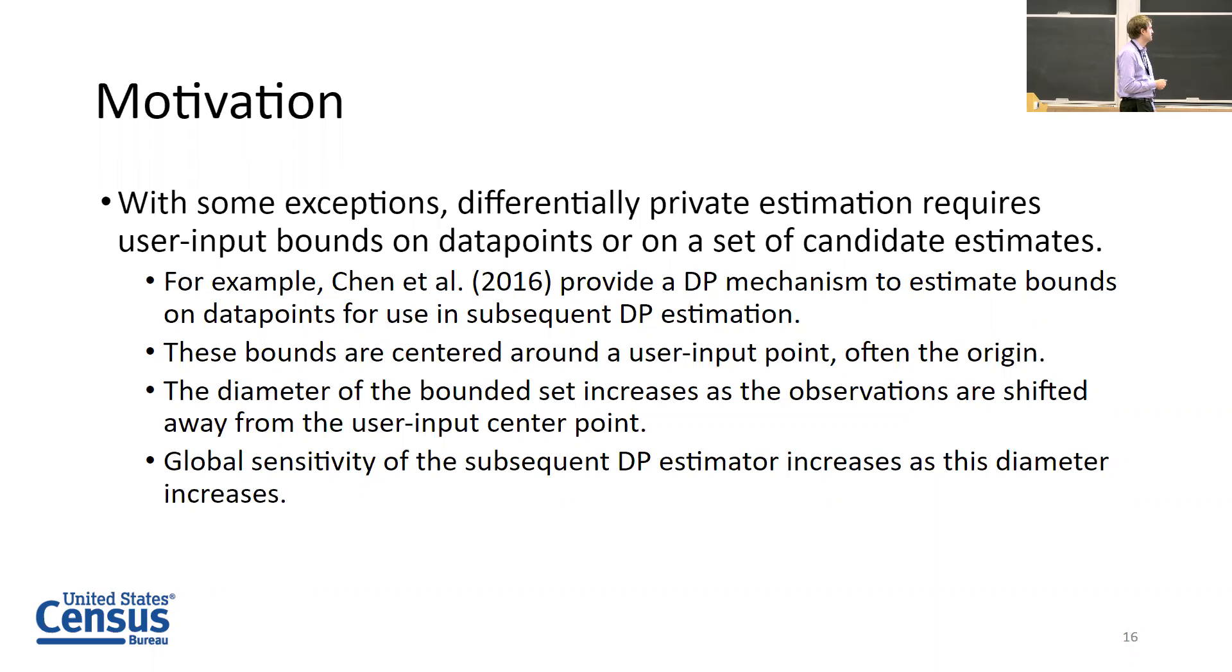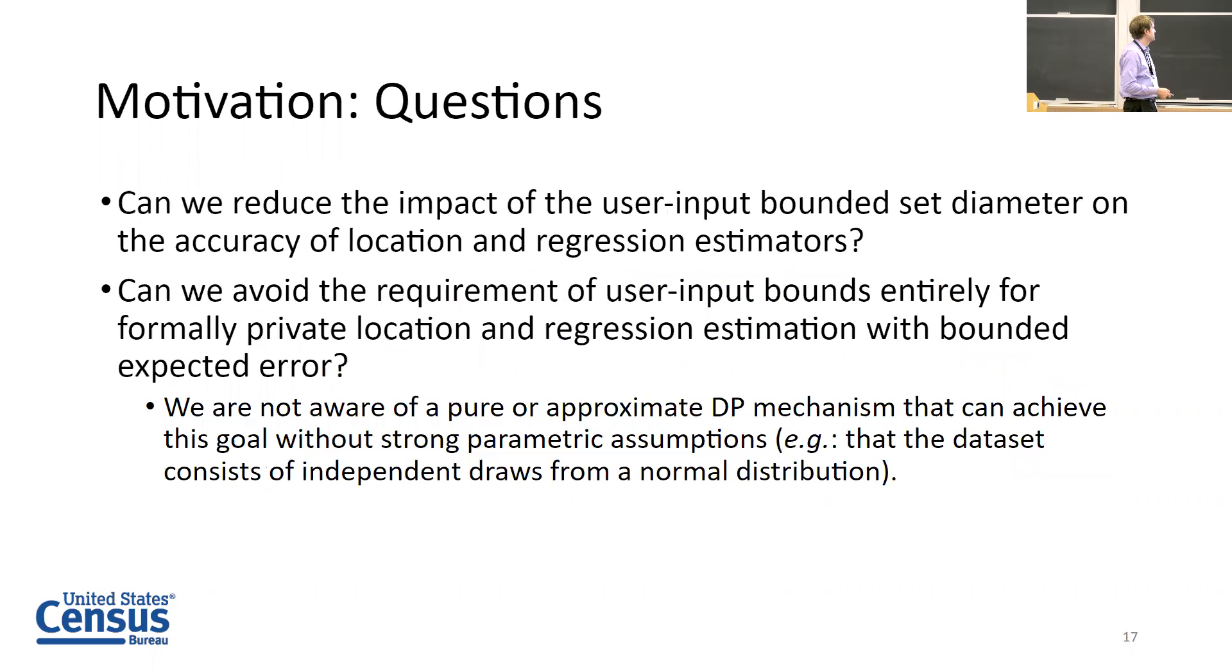The two areas I'm mostly focused on: how do we reduce the impact of these user input bounds on the accuracy of the final estimator, and can we avoid any bounds requirements at all and give some sort of privacy guarantee - not necessarily differential privacy - because I'm not aware of a pure approximate DP mechanism that can do this without strong parametric assumptions like normality.